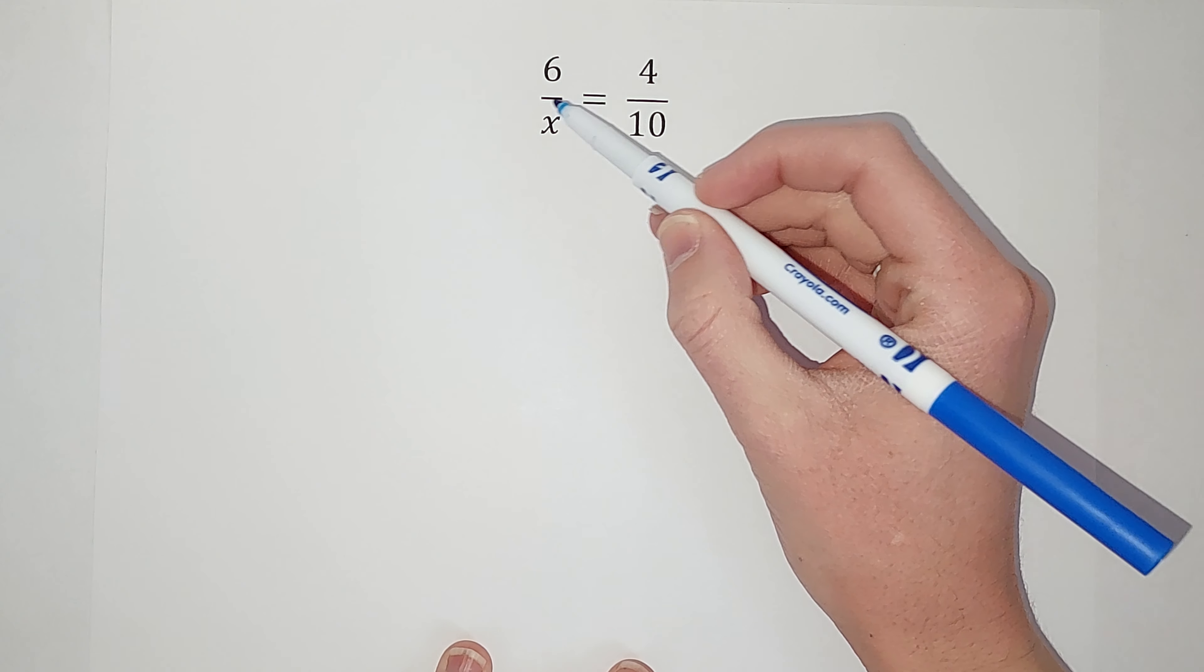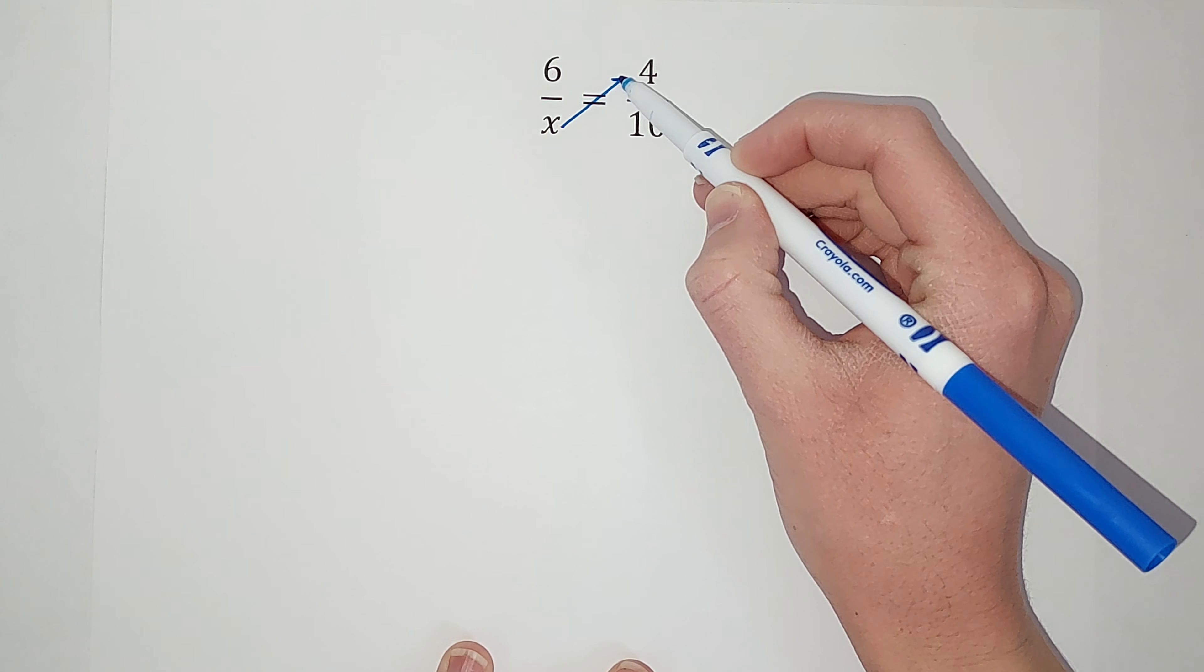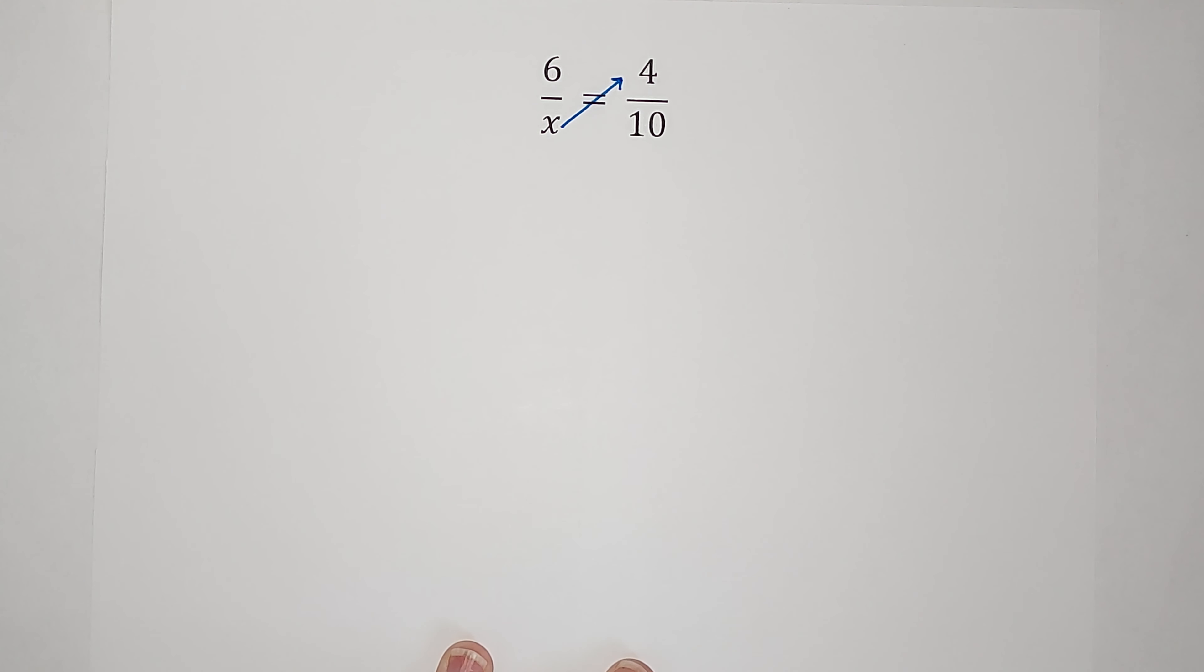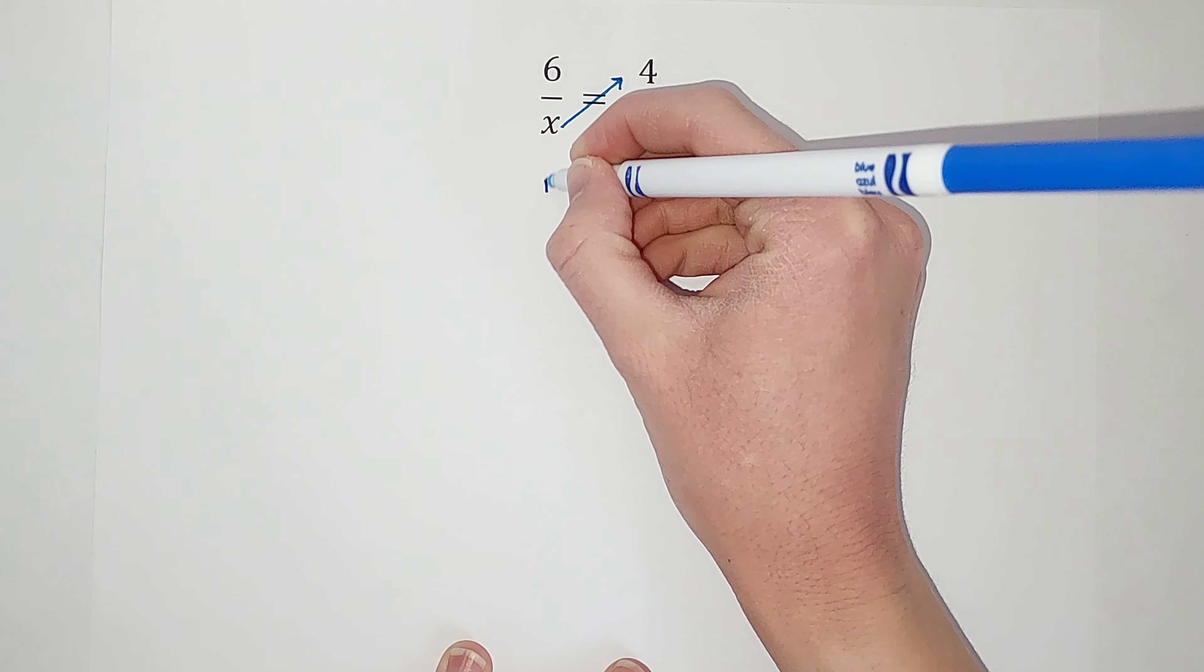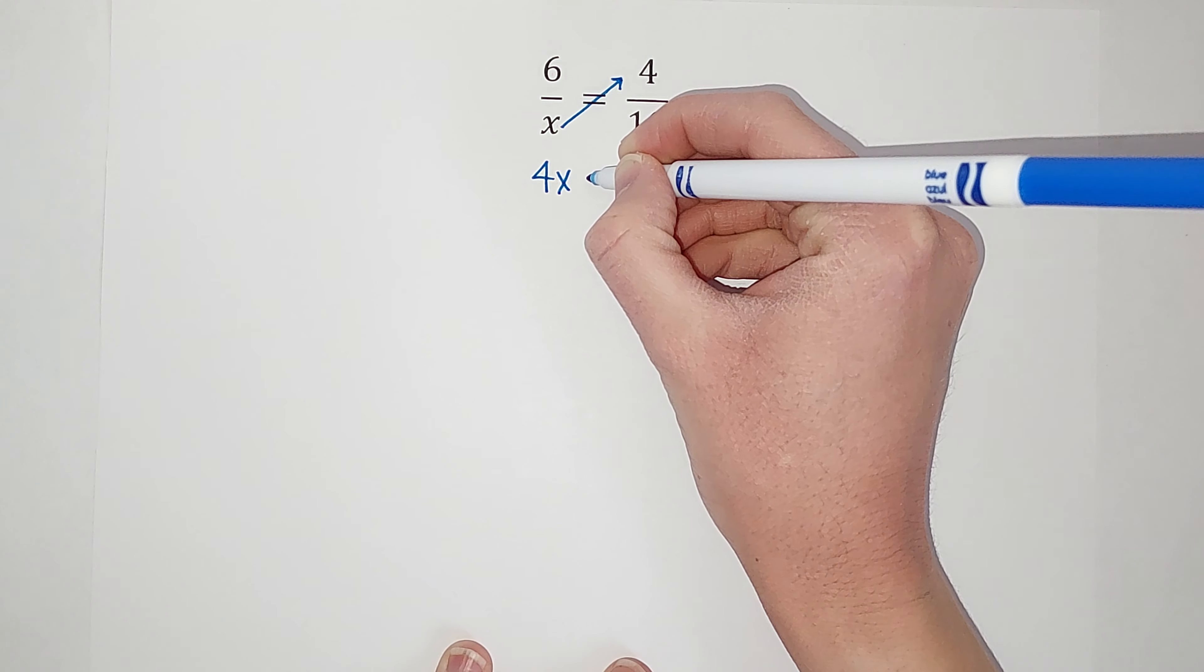So what we need to do to figure that out is we're going to use cross products. How we do that is we go from the denominator of one of our fractions and multiply to the numerator of the other.